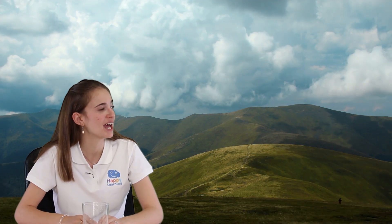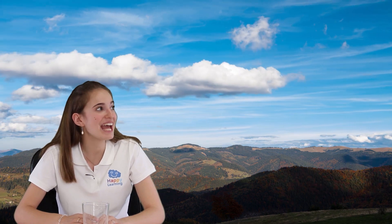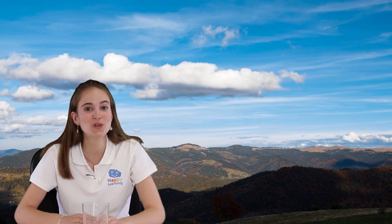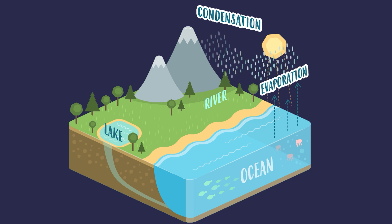Water vapour rises into the atmosphere and it cools. This is when the next phase in the water cycle arrives. Condensation is when water vapour cools and condenses, meaning that it goes back into liquid form, forming tiny little water droplets — thousands and thousands of them — forming clouds.